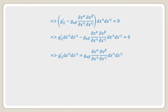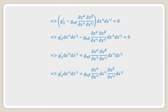Shifting the second term to the right-hand side, the right-hand side can be written as z_αβ (∂x^α / ∂x'^i) dx'^i times (∂x^β / ∂x'^j) dx'^j. Now (∂x^α / ∂x'^i) dx'^i can be replaced by dx^α, and (∂x^β / ∂x'^j) dx'^j can be written as dx^β.